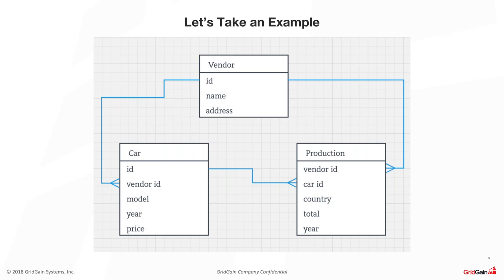As Cassandra architecture suggests, first you need to come up with a list of queries you'd like to use in your application, and only after that start modeling and denormalizing your data to prepare the tables or attributes you need. Let's follow this approach — assume we have a query that our application needs to answer: what are the car models produced by a vendor within a particular time frame, showing the newest cars first?